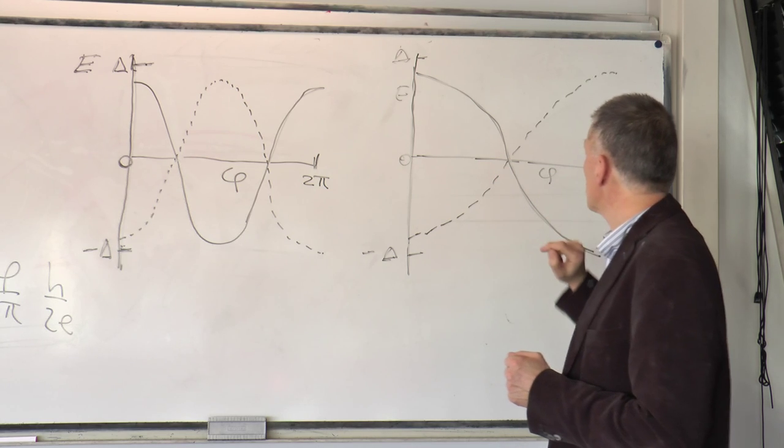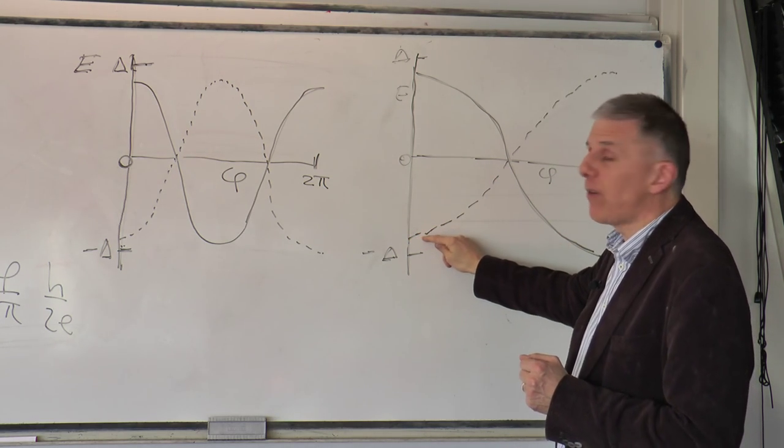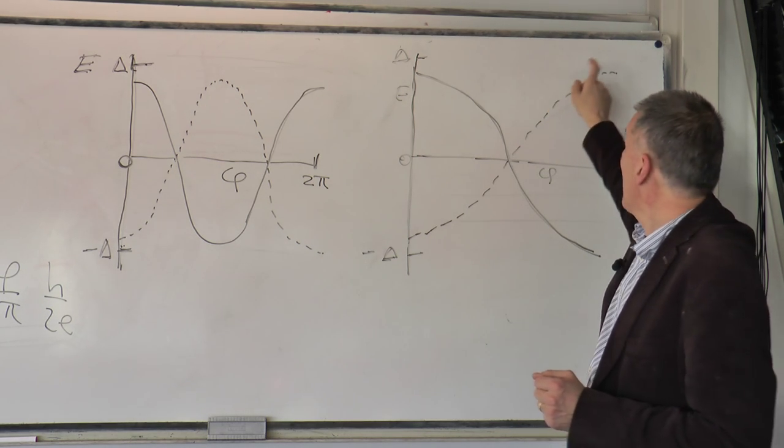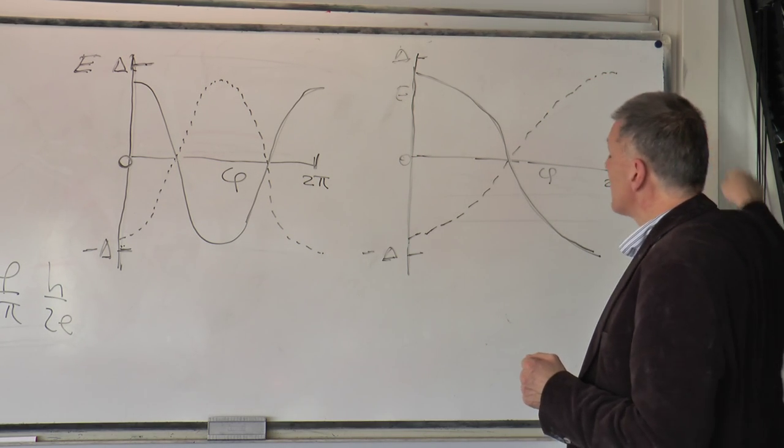This has two level crossings, here this is one level crossing. So now if I follow this level slowly, adiabatically, and I wind the phase by two pi, I am not back. I have to wind another two pi.